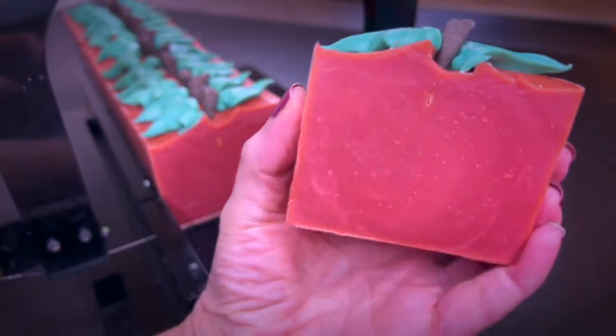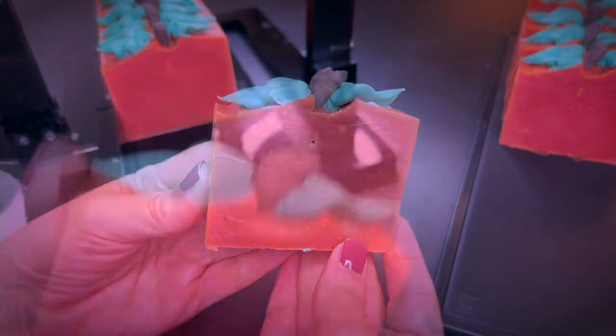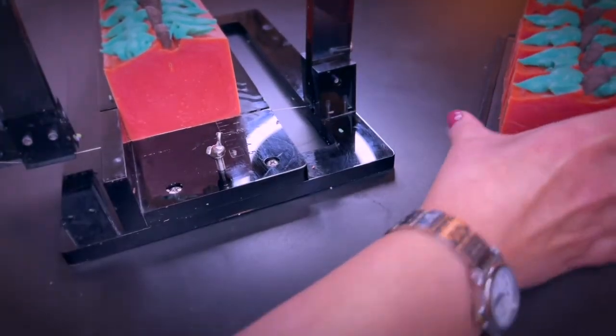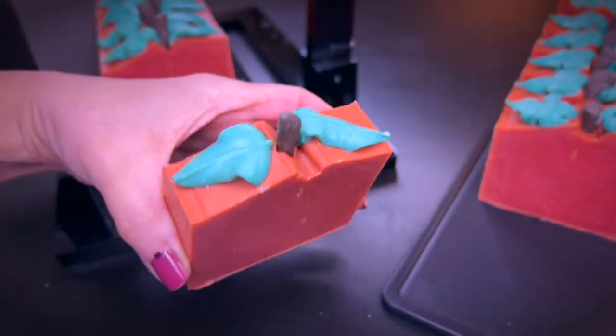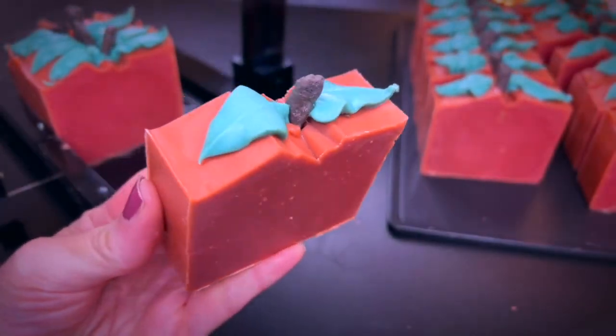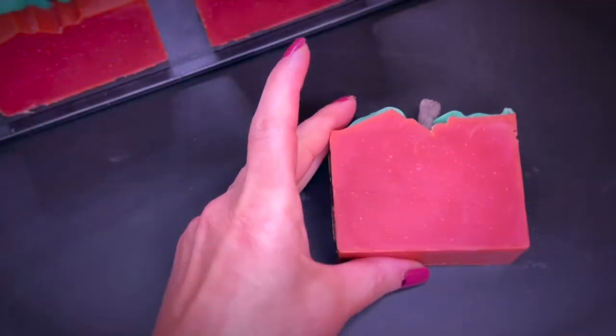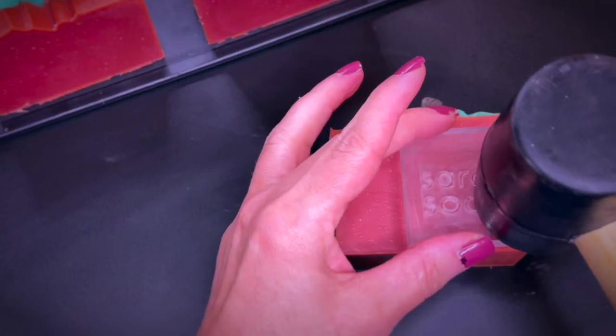I really love the color and how the bars turned out in general. I am going to stamp this right after. I place my acrylic stamp on the desired place and then I give it a light tap with my rubber mallet.